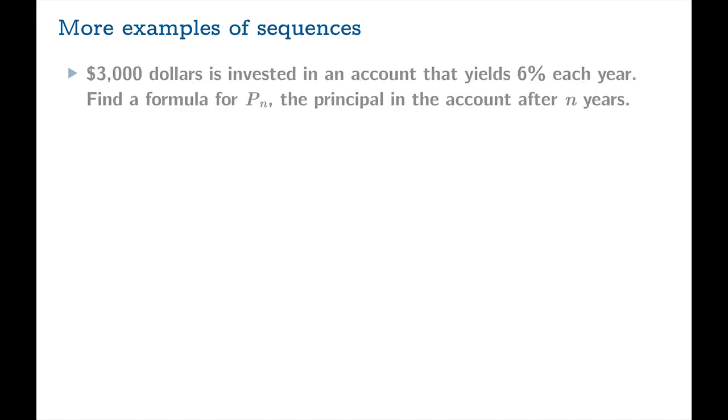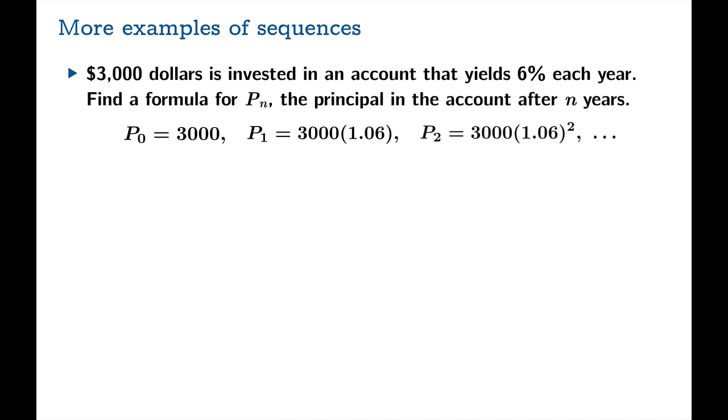Here's something a little more mundane. Suppose $3,000 is invested in an account that yields 6% each year. Find a formula for P_n, the principal in the account after n years. This is a good example to show you why you might want to start somewhere other than n equals 1 for your index. So we'll use P_0 for the principal. After one year, then, you're going to have 3,000 times 1.06. Two years, 3,000 times 1.06 squared, etc. So then your formula for P_n is simply 3,000 times 1.06 to the n.